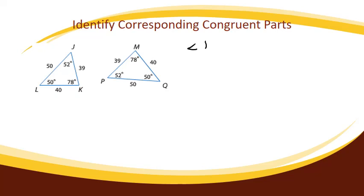So angle J would be congruent to, well, it's 52 degrees, and I see down here on the second triangle, that angle P is 52 degrees, is congruent to angle P.